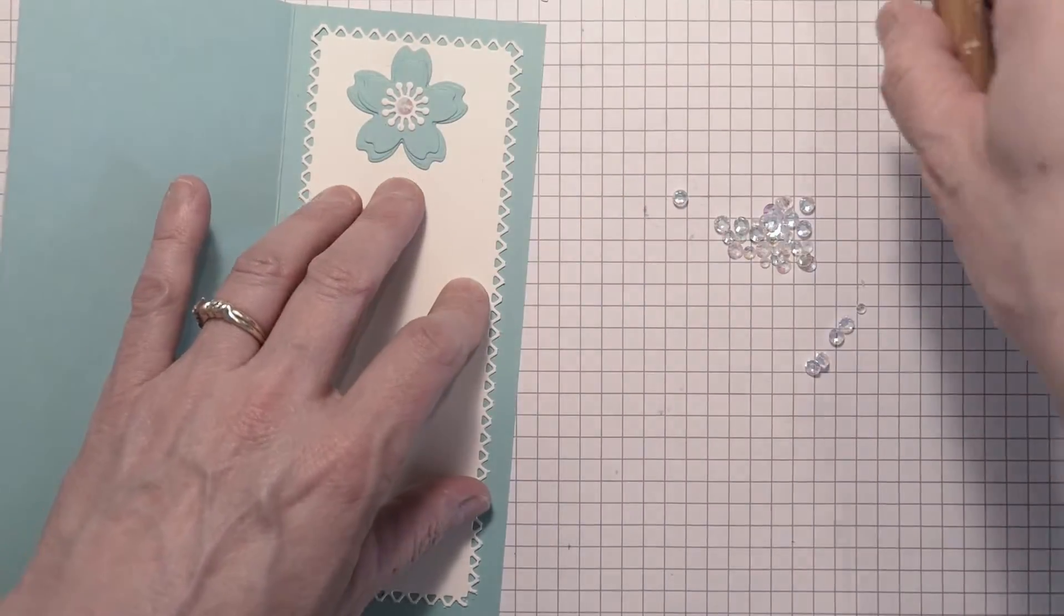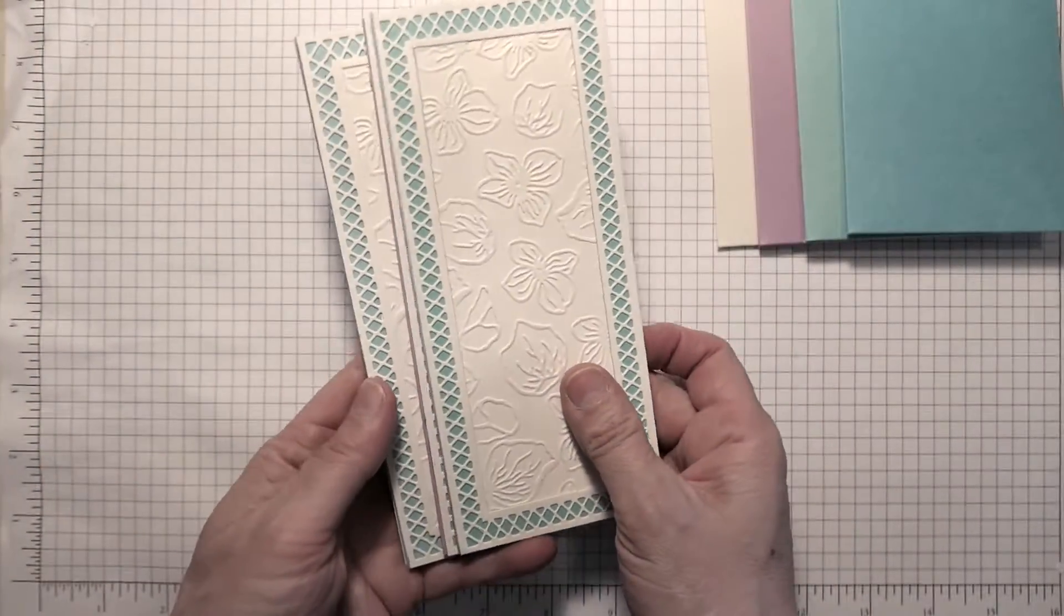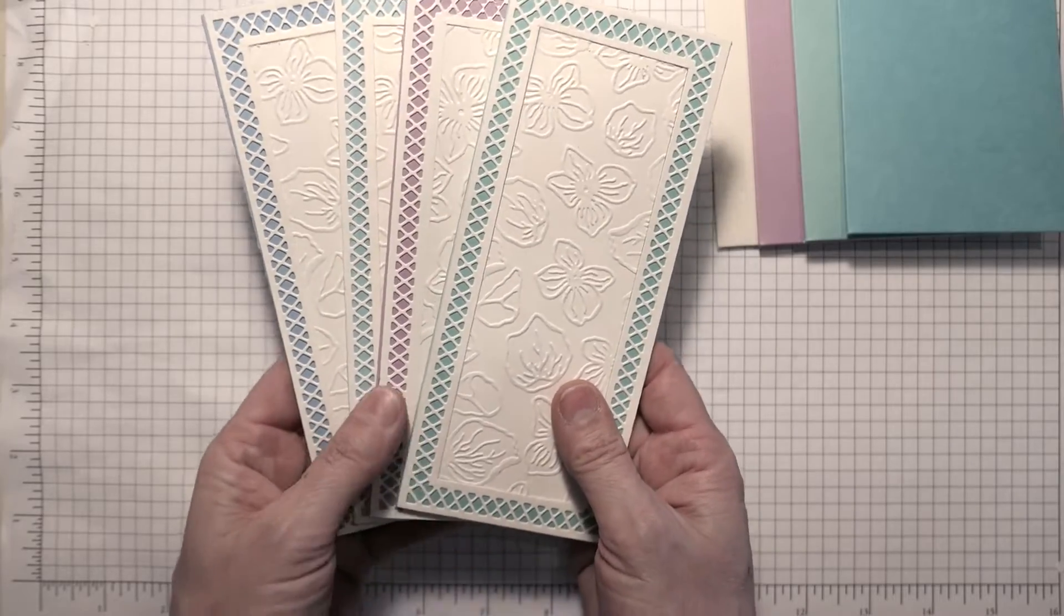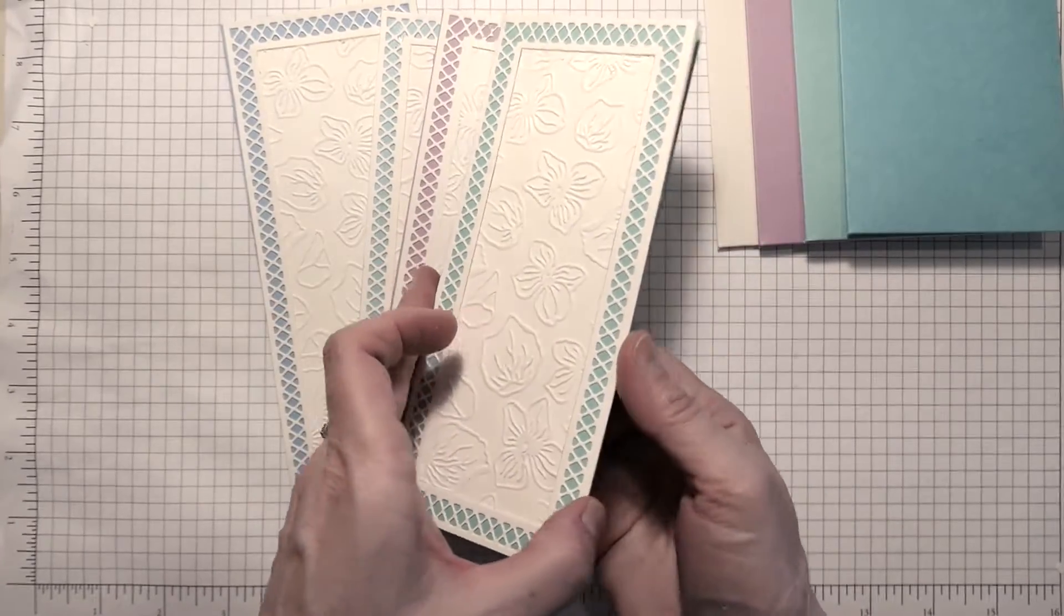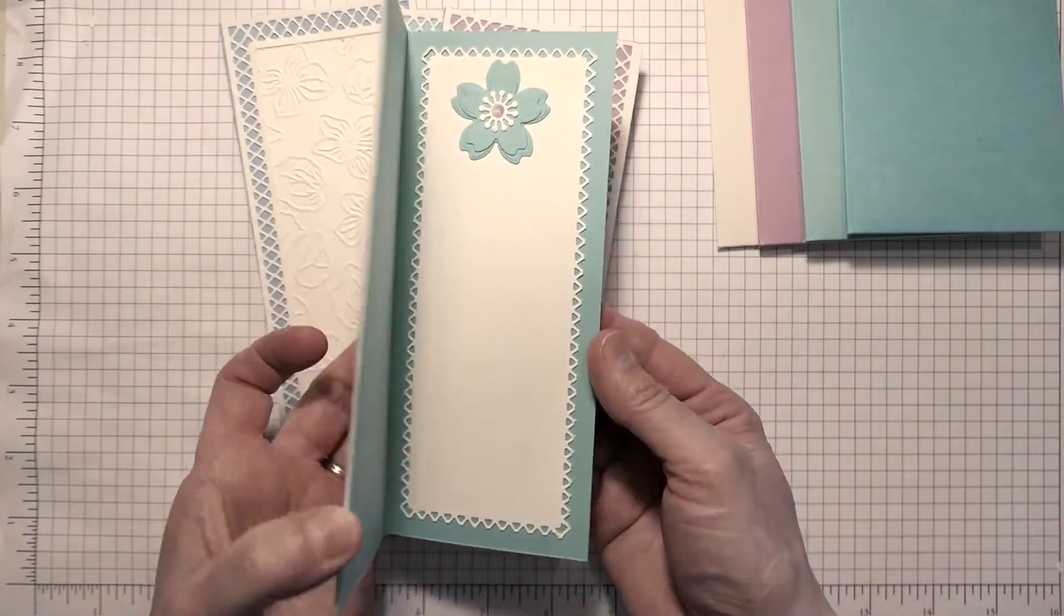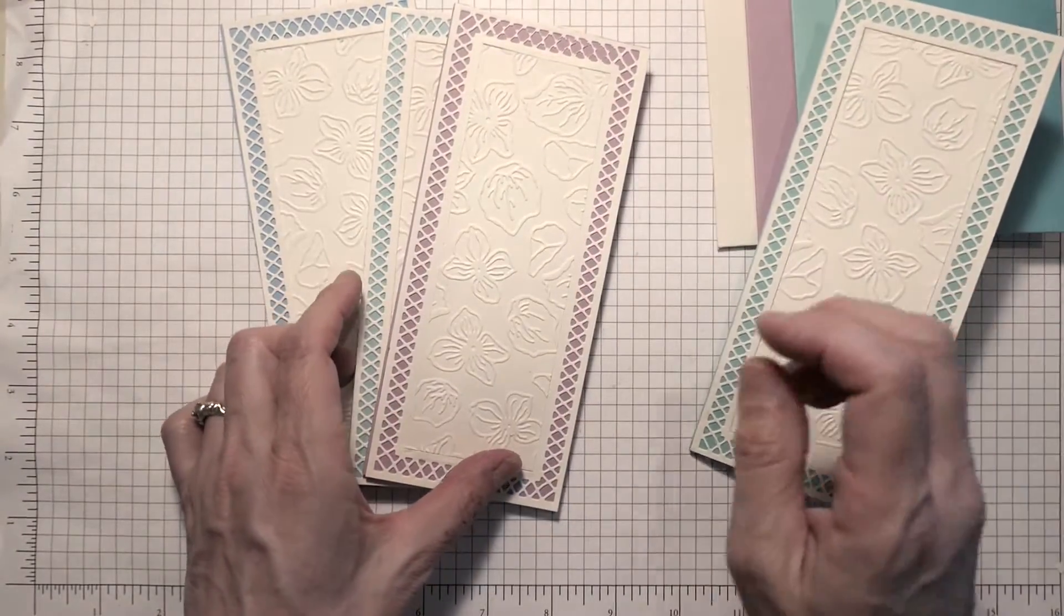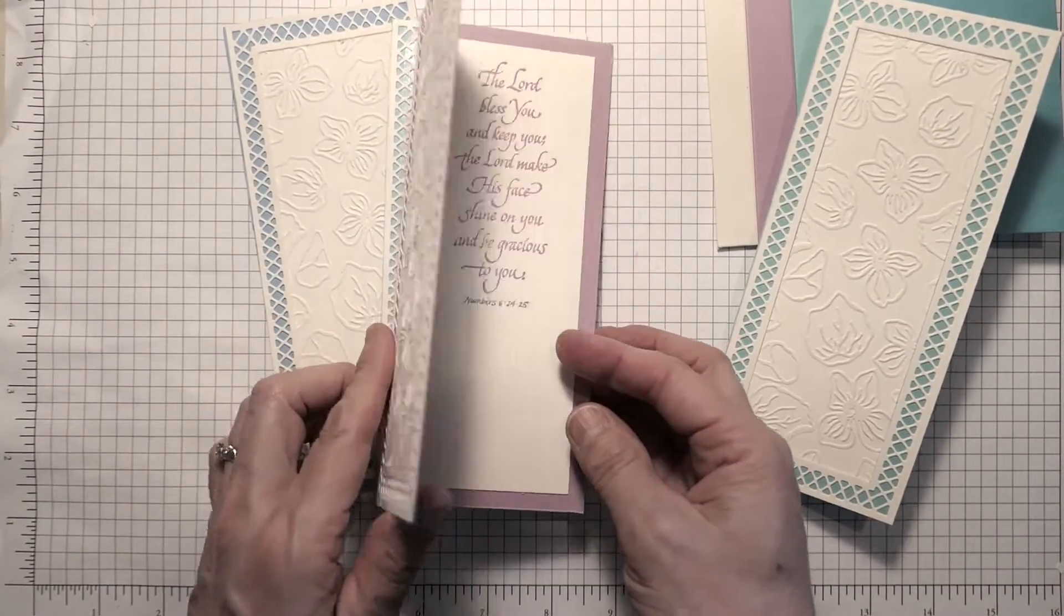I put one little gem on the center of the flower and then I made a bunch more. These were so much fun and I was just so excited to find out how to make a frame smaller with no seams. Easy, super easy and fast.